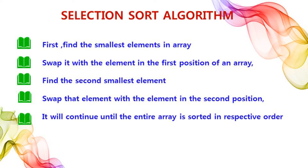Selection sort algorithm is a simple sorting algorithm. It is an in-place comparison-based algorithm in which the list is divided into two parts: the sorted part at the left end and the unsorted part, which is initially the entire list. We find the smallest element in the array and swap it with the first element. Then we find the second smallest element and swap it into position. These steps continue until the entire array is sorted.